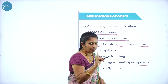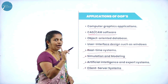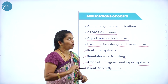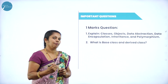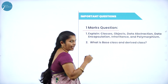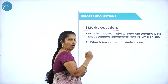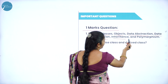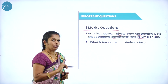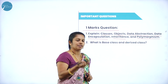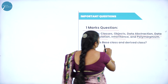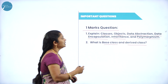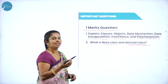For exam questions, from part D you may get questions like: write the application of Hoops, write the advantages of Hoops, or write the disadvantages of Hoops. For one mark, questions like define what you mean by class, object, data abstraction, data encapsulation, inheritance, or polymorphism. They may also ask what you mean by base class or derived class — the existing class is called the base class, and the new class is called the derived class.